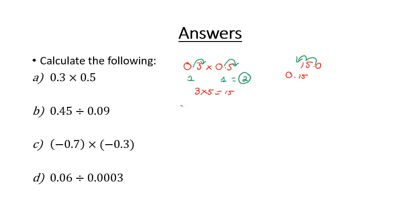In our next question we have 0.45 divided by 0.09. Writing it as a fraction, we need whole numbers on both numerator and denominator. If we move the decimal place two spots on each side, we end up with 45 over 9. We know 45 divided by 9 is 5, so that's our answer.